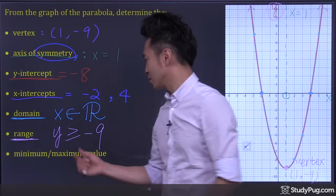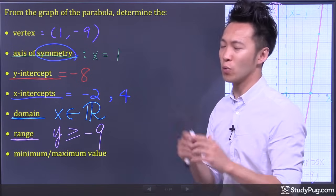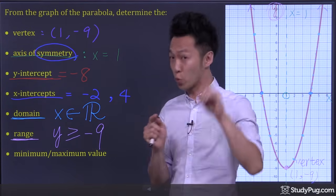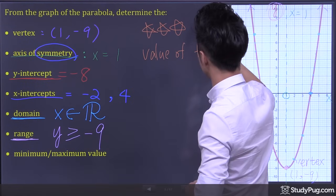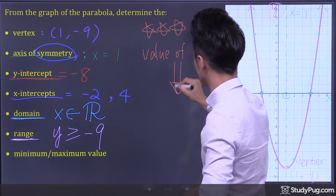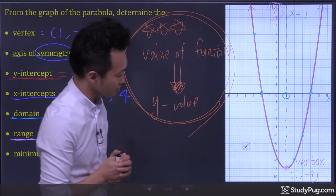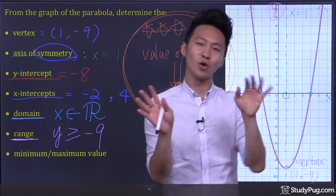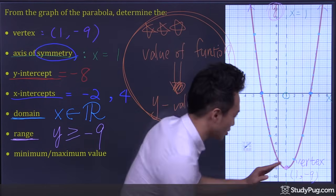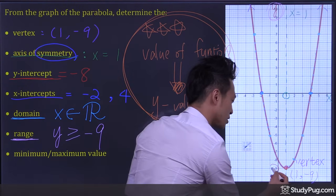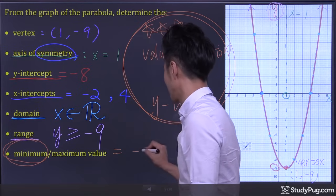Does this parabola have a minimum value or a maximum value? Well, in math, whenever we talk about the value of a function, we are always referring to the y value. Since the parabola can go as high as it likes, there's no maximum value. However, the parabola can only go as low as right here, where the y value is negative 9. Therefore, we say this parabola has a minimum value of negative 9.